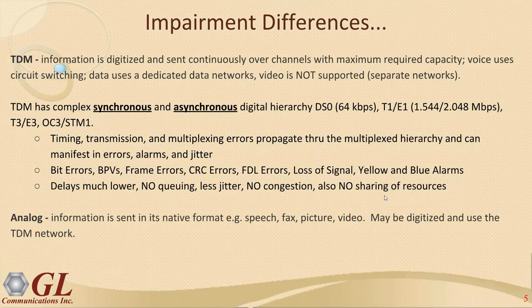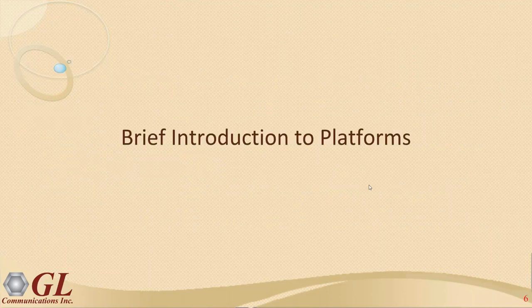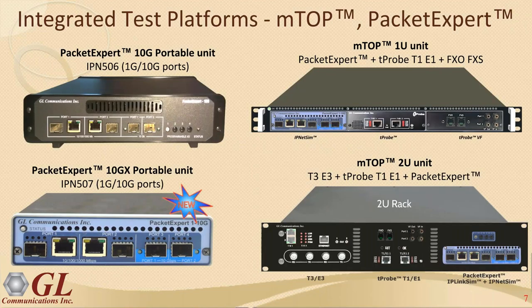Analog networks are what the entire network was originally made of — analog circuit switching, which later turned into digital technology, because analog traffic can always be digitized and packetized. Analog signals have finite bandwidth and can be digitized by sampling at a rate that preserves their content. End users process analog information, while machines process data. We'll now give a brief introduction to the GL platforms on which these emulators and impairment simulators are offered.